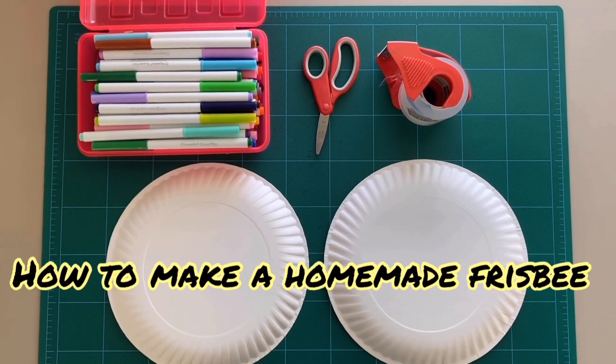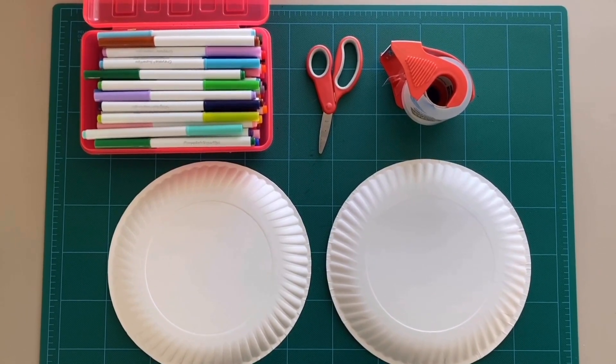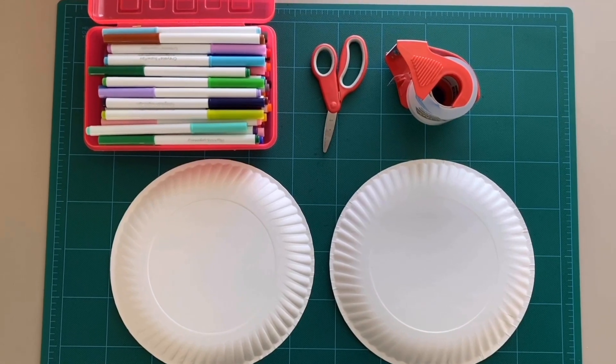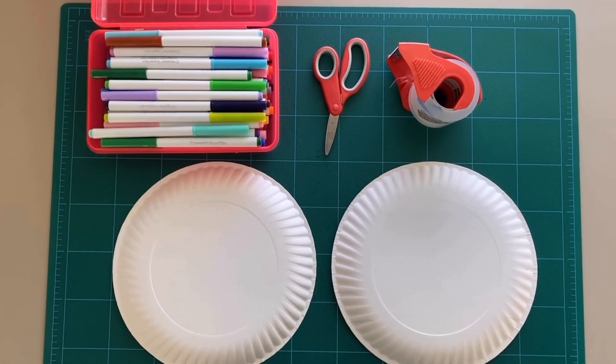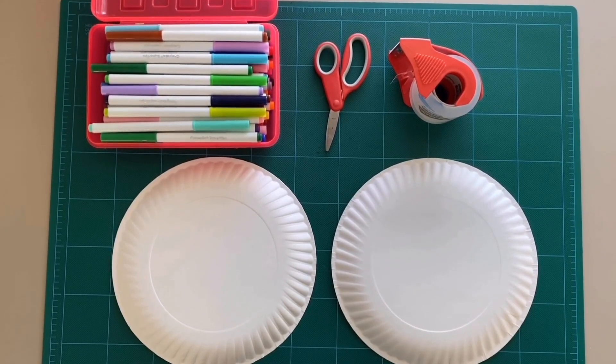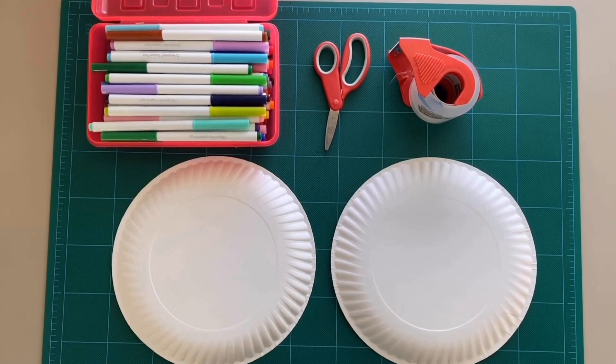If you don't have a frisbee at home, we're going to learn how to make your very own. What you need is two paper plates, some colorful markers, scissors and some mailing tape or any type of clear tape that you might have to keep the two plates together.